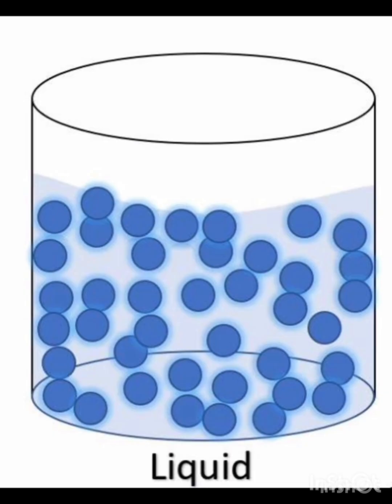Next is liquid. Liquid has a definite volume but does not have a definite shape. In liquid, particles are closely packed similar to solid, but they are not fixed in place and can move around, allowing liquids to flow.